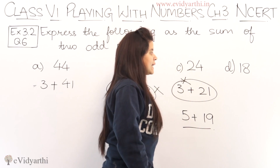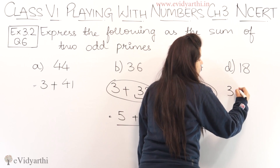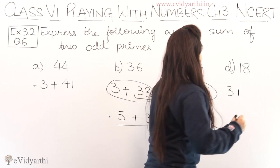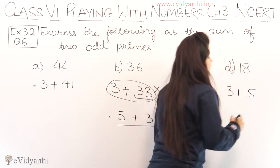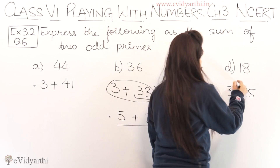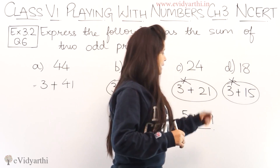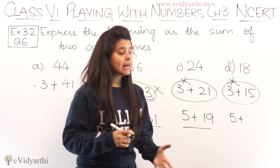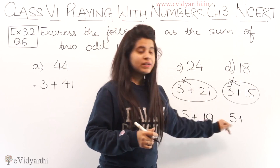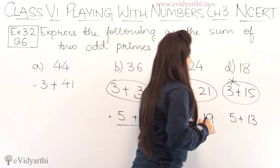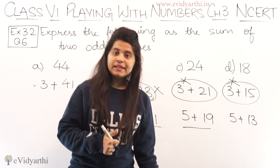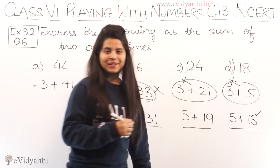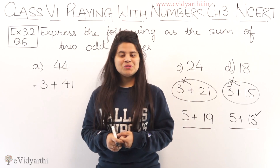Moving to the D part — D part mein paas hai 18. Again 3 se start karte hain: 18 minus 3 is 15. Ab 15 hamara prime number nahi hai, so yeh option nahi ho sakta. Next lete hain 5: 18 minus 5 is 13. So 5 plus 13 is 18, aur 13 hamara odd number bhi hai, prime number bhi hai. So this means yeh combination ho sakta hai. So this was question number 6 — now let's come to the next question.